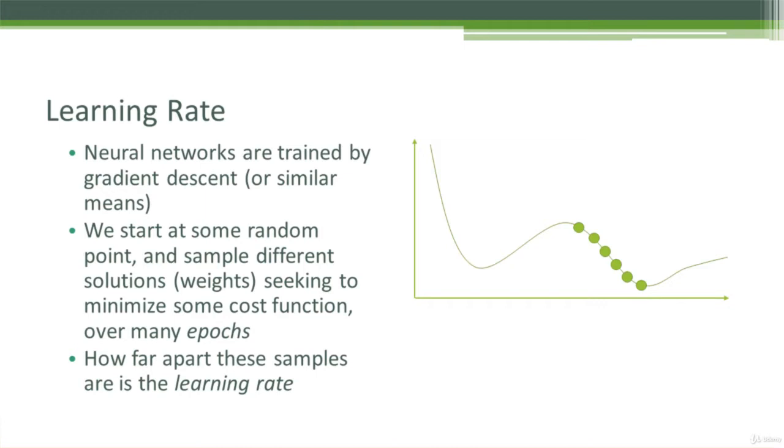The basic idea is that we start at some random point of weights in our neural network, and we just sample different solutions, different sets of weights, trying to minimize some cost function that we define over several epochs. So those are the key words there. We have many epochs, iterations over which we train.